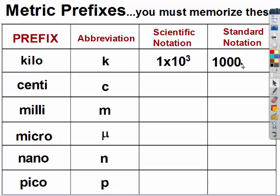All the other prefixes are less than what you're talking about. So centi is 1 times 10 to the negative 2 of whatever we're talking about, or 100. In other words, there's 100 centimeters in a meter. Milli is 1 times 10 to the negative 3rd, or 1,000.